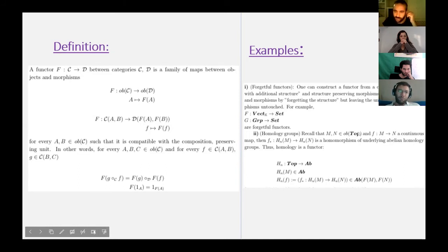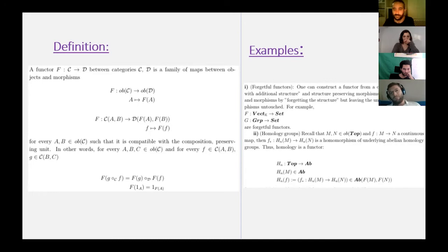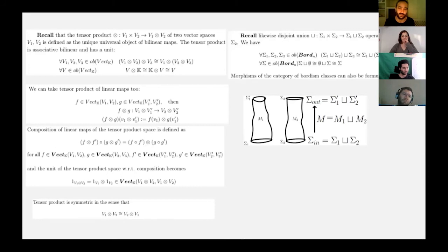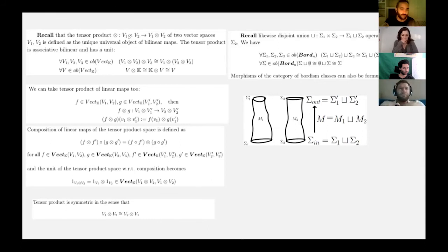Are there any questions about categories or functors? I guess not. Then I can continue with monoidal structure. I want to first motivate monoidal structure on categories. For this, I will use tensor product and the disjoint union operator.